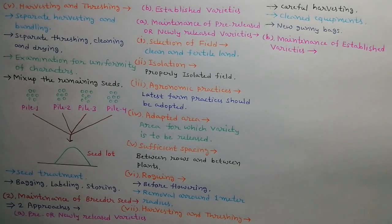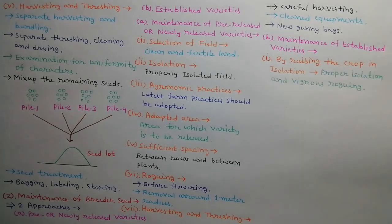Second is maintenance of breeder seed of established varieties. First method is by raising the crop in isolation. Breeder seeds must be grown in isolated plots and vigorous rogging must be done during various stages of crop growth.